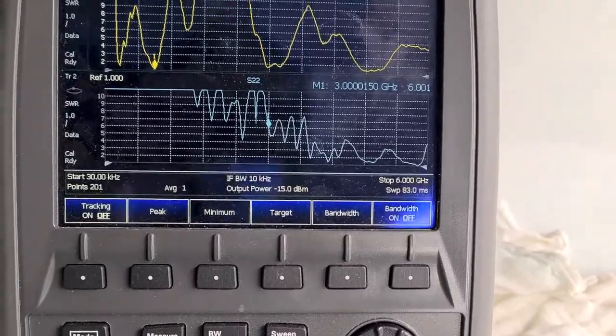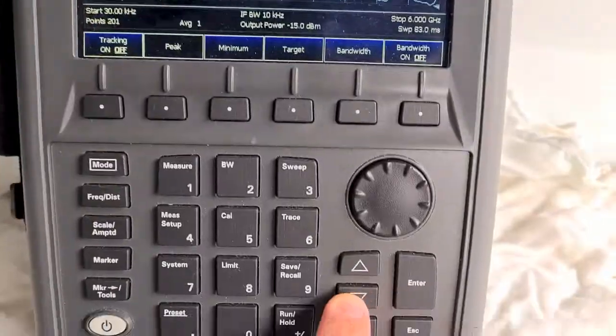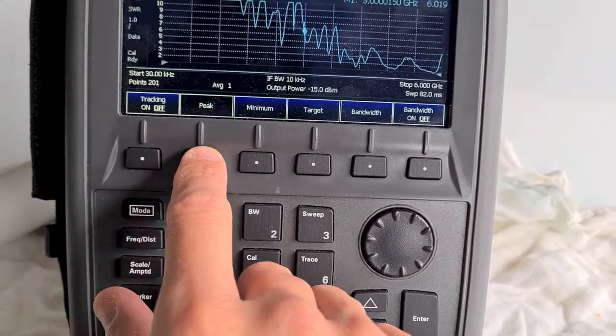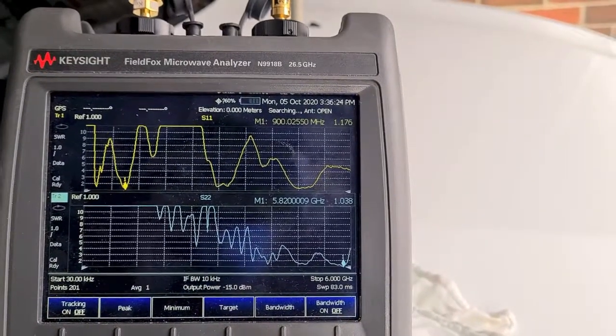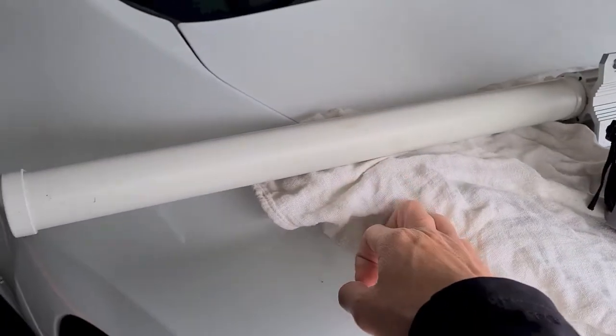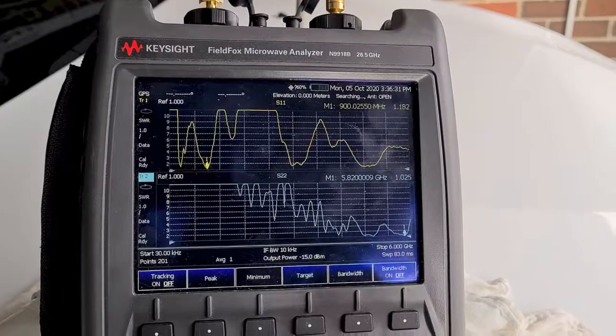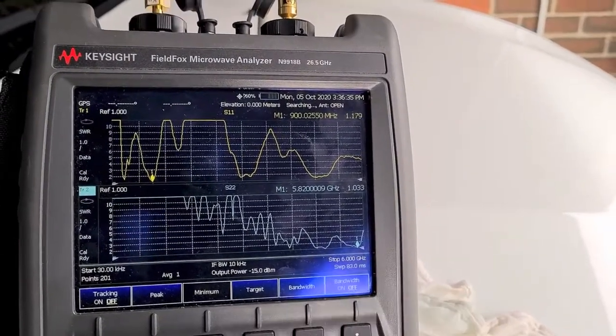Let's go to trace 2, let's press down, minimum. So this antenna was designed for dual band, 2.4 and also 5.8 gig. So there you go. At 5.8 gig, it is according to the manufacturer's spec.